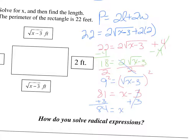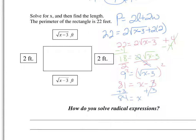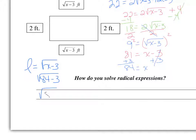Checking: 84 minus 3 is 81, the square root of 81 is 9, and 9 times 2 is 18. 18 plus 4 equals 22, so it checks out. We solved for x equals 84, but we also need to find the length of the rectangle. The length equals the square root of x minus 3, with x equals 84: 84 minus 3 is 81, and the square root of 81 is 9. So the length equals 9 feet.